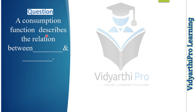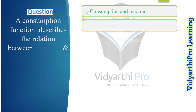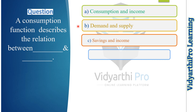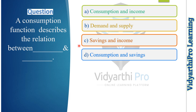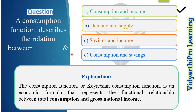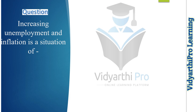Our next question: a consumption function describes the relation between what and what? Options: consumption and income, demand and supply, savings and income, or consumption and savings. The correct answer is option A, consumption and income, because the consumption function — or Keynesian consumption function — is an economic formula representing the functional relationship between total consumption and gross national income.